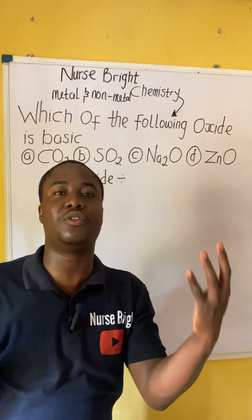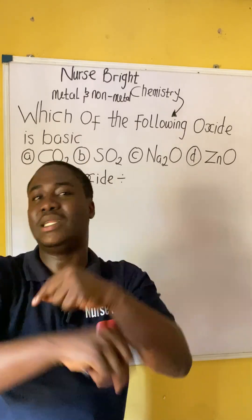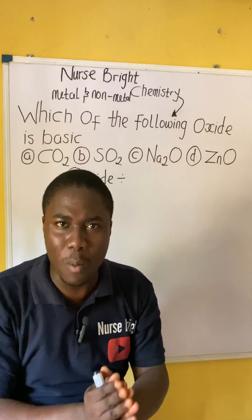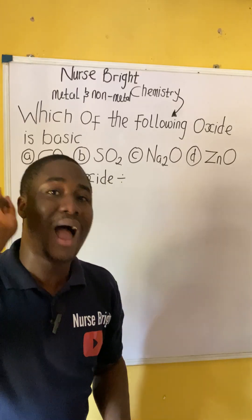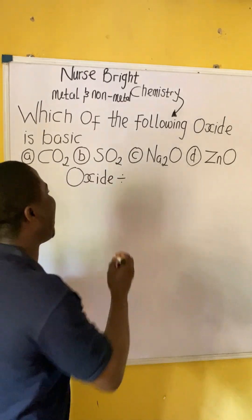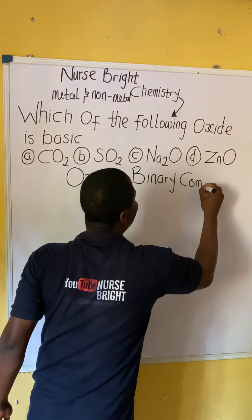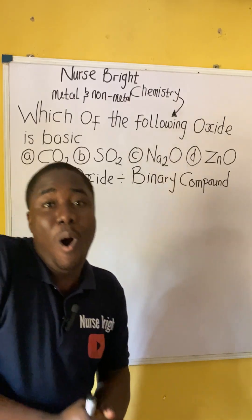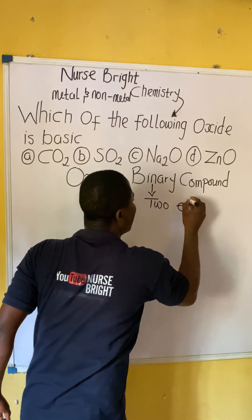Compounds are made up of different elements — compounds are formed by the combination of different elements. For instance, hydrogen combines with chlorine, you get HCl. That is a compound. So oxides are compounds, but what type? Oxides are binary compounds. Please take note. For an oxide to be binary, it tells us that any compound that is an oxide will be made up of two elements.